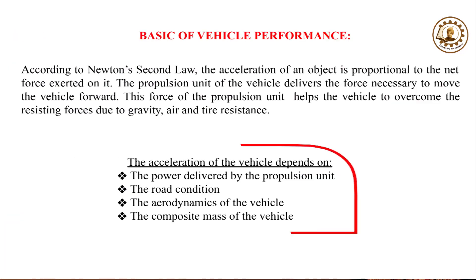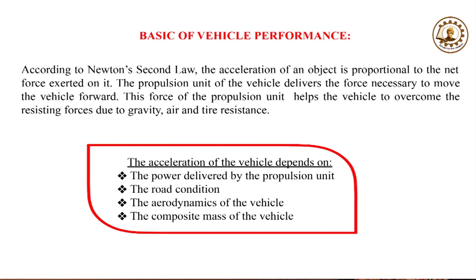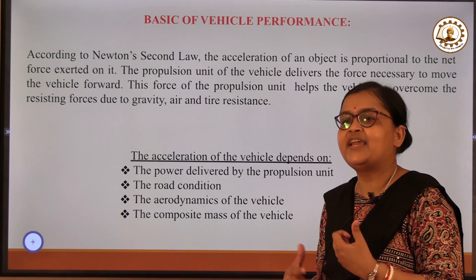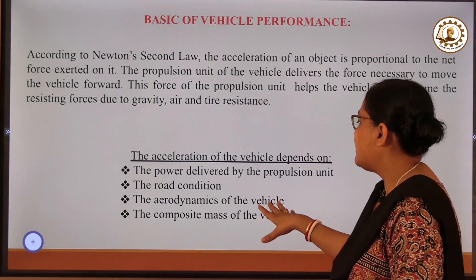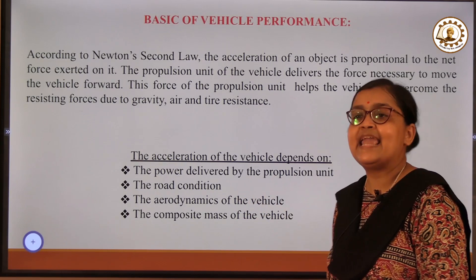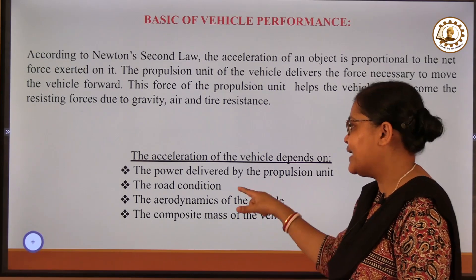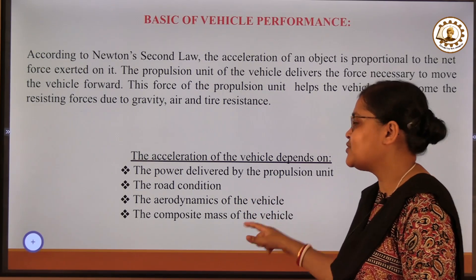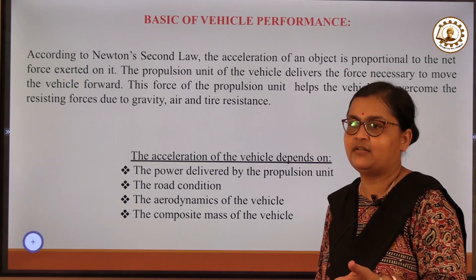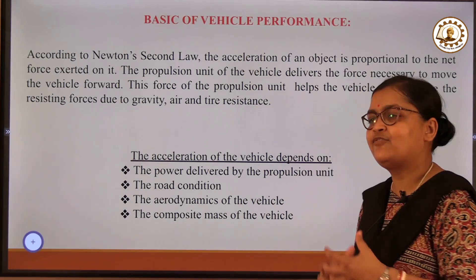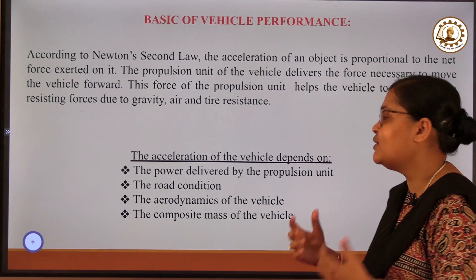The acceleration of the vehicle is dependent upon the power delivered by the propulsion unit — which refers to the different types of electric motors. It is also dependent on road condition, because if the road is bumpy and not smooth, vehicle performance decreases. Additionally, it depends on the aerodynamics of the vehicle and on the composite mass of the vehicle. How these factors interact will be analysed by a mathematical model.